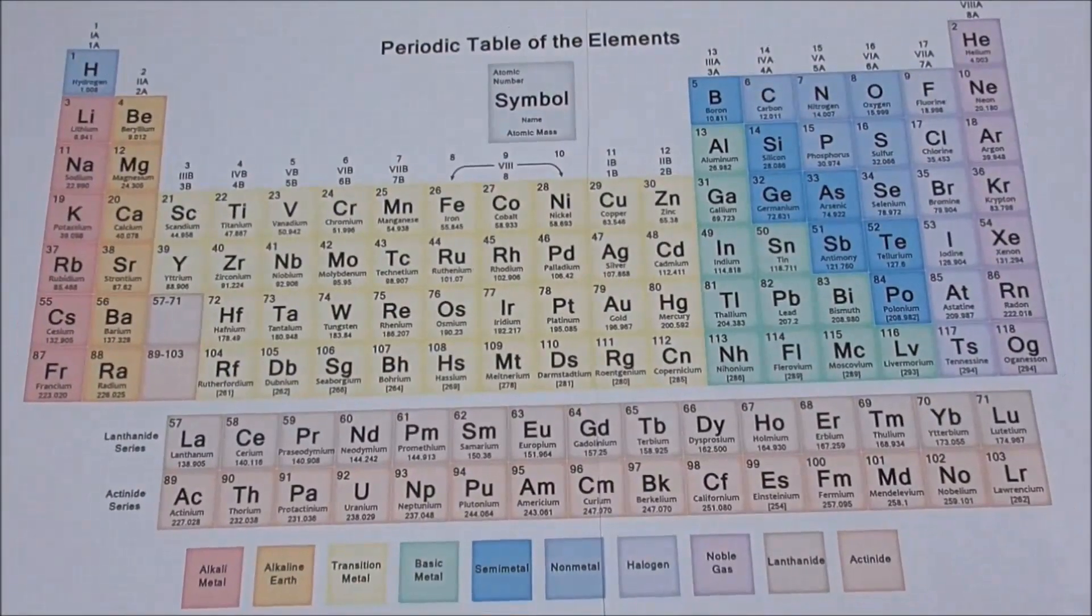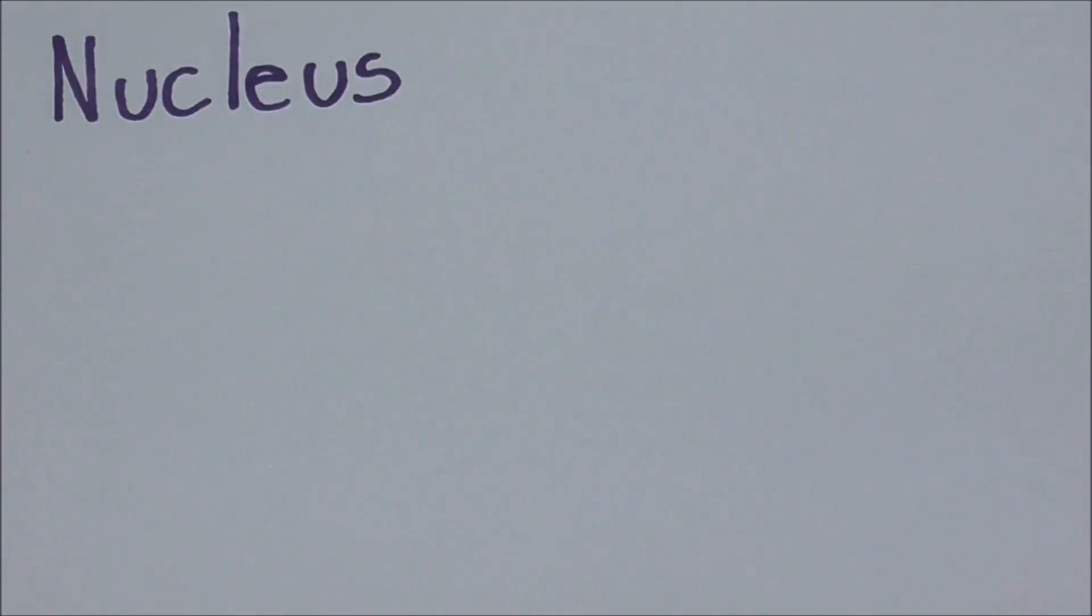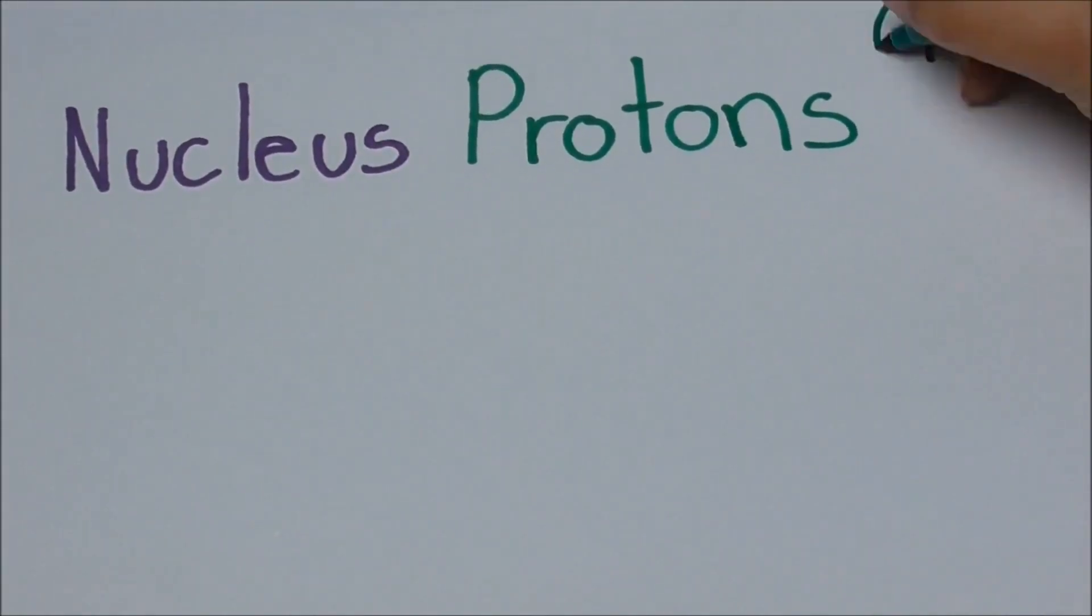Important things about atoms: they have a nucleus, which is made up of protons, which are positively charged, and neutrons, which have no charge.